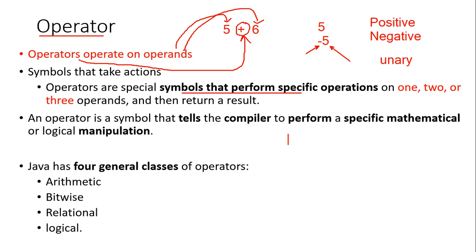However, if you write '4 * 5', the star symbol, which stands for multiplication, acts on two operands. Such an operator, which requires two operands, is called a binary operator.